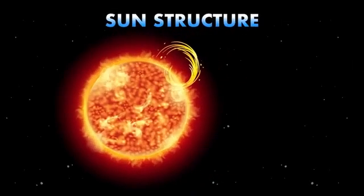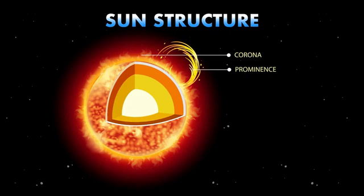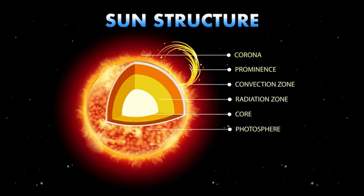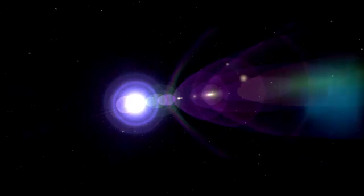One intriguing process within the star is stellar convection, where energy generated in the core rises toward the surface. This movement creates convection currents that transport energy outward, balancing the star's internal processes with its external luminosity. These currents also cause variations in brightness, manifesting as the pulsations observed from Earth.